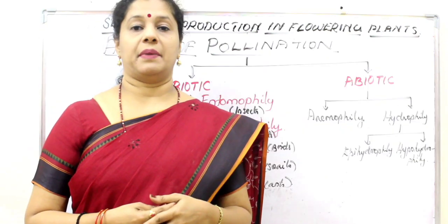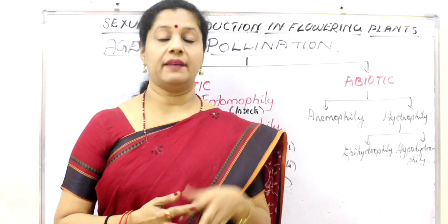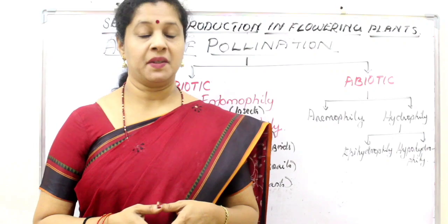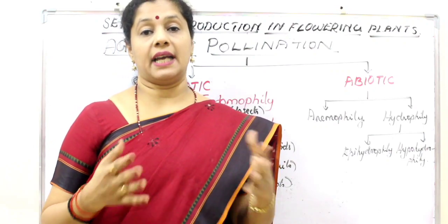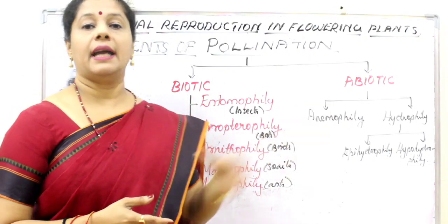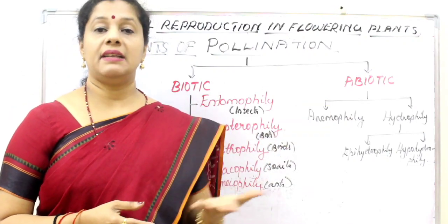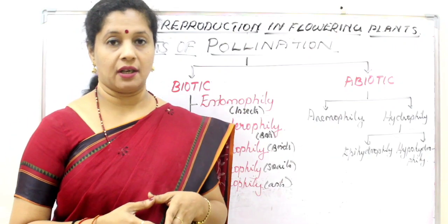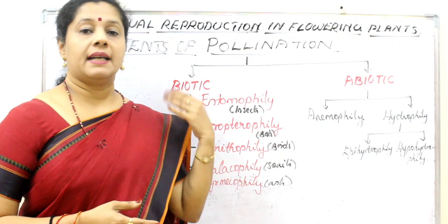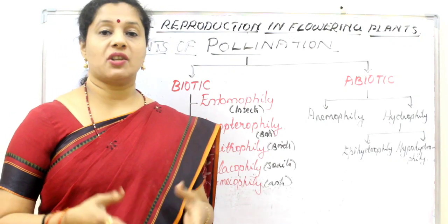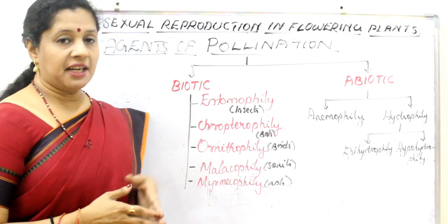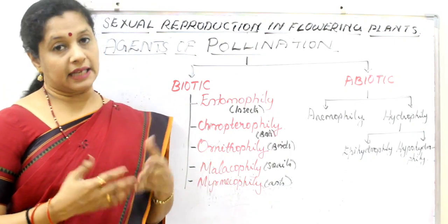For pollination to happen, agents may be required for the transfer of pollen — especially for cross-pollination and xenogamy. There are two types of pollinating agents: biotic and abiotic. Biotic means living organisms carrying out pollination; abiotic means non-living agents. Among these, biotic is most common, and since it is carried out by different animals, we collectively call it zoophily.